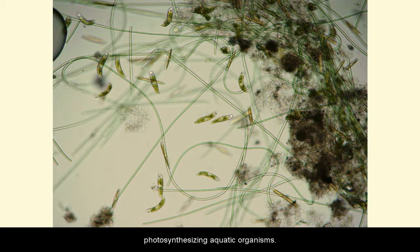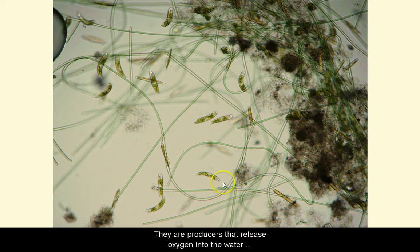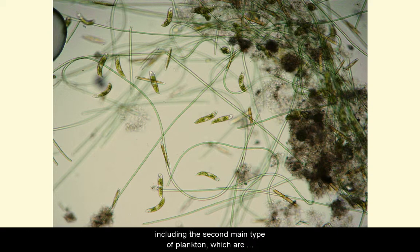There are two kinds of plankton. Phytoplankton are photosynthesizing aquatic organisms. They can grow in a lake's sunlit, open water photic zone where rooted plants can't. They are producers that release oxygen into the water and serve as food for many kinds of aquatic animals, including the second main type of plankton.